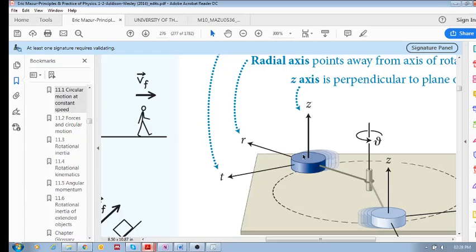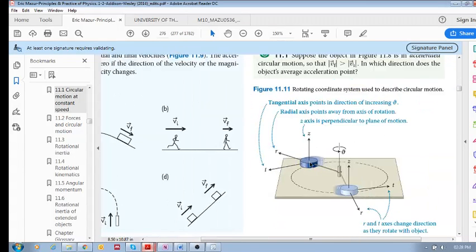And then the tangential axis is the axis that is tangent to the path, the motion. So it's tangent, and the positive direction of the tangential axis is always the direction in which the particle is moving.